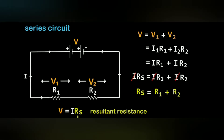When we add both the values of V1 and V2 to get the total resultant voltage, we get V is equal to V1 plus V2. Applying the values, we get I Rs equal to I R1 plus I R2. Cancelling I from both sides, we finally get Rs is equal to R1 plus R2. This is the series combination.